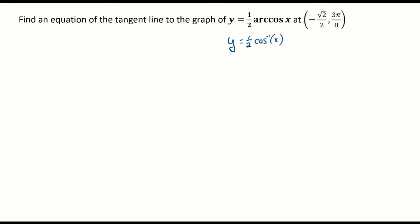To find a tangent line, you need to know the slope and a point. So I need to find the slope of this function at x equals negative square root of 2 divided by 2. To find the slope, I'm going to have to find the derivative.